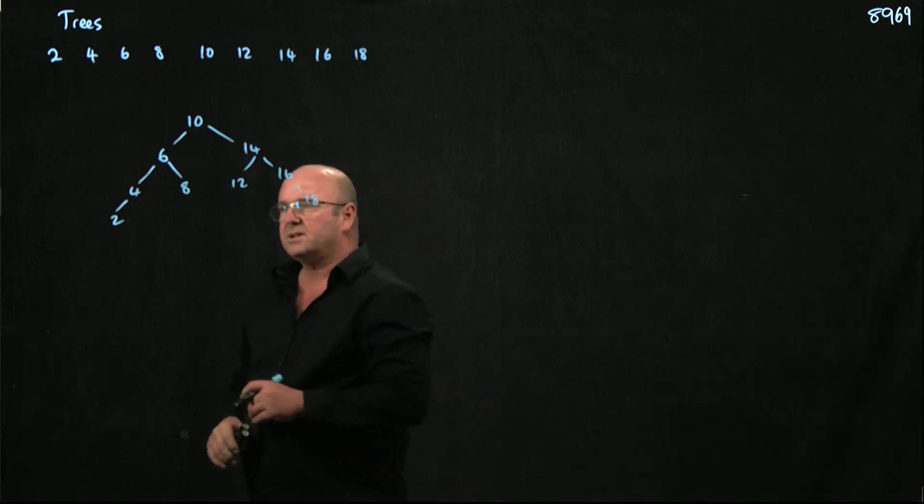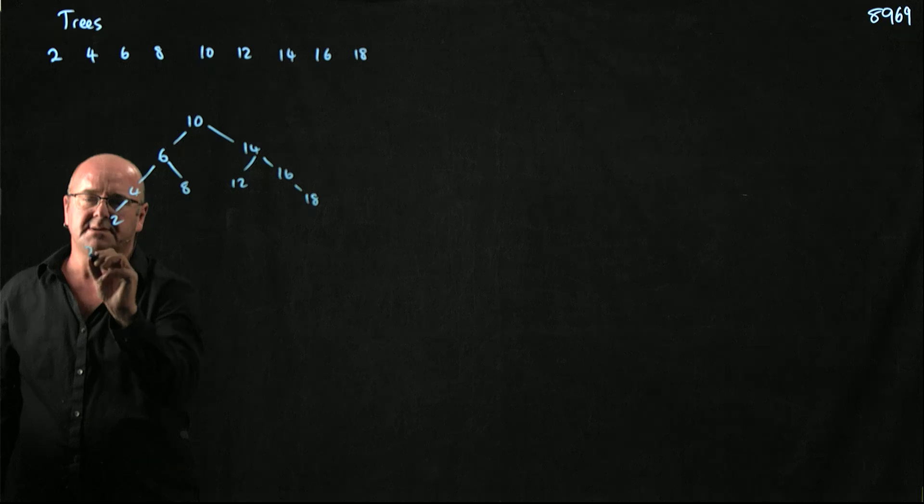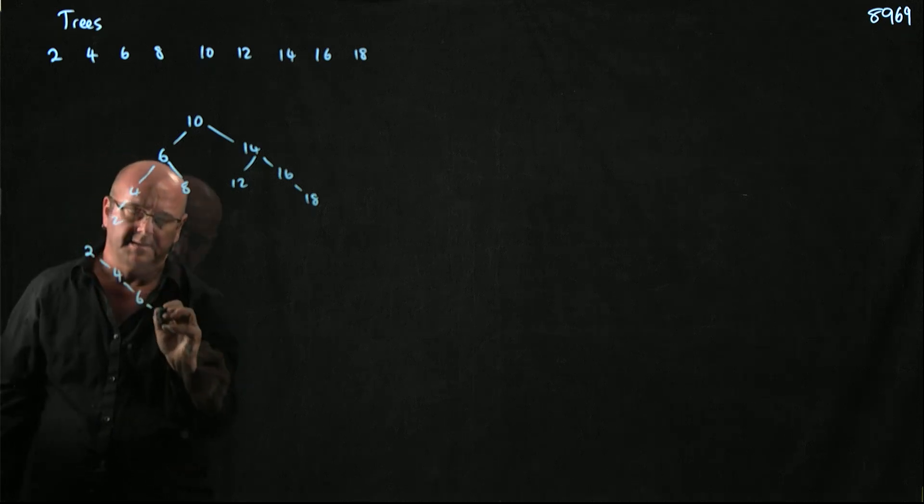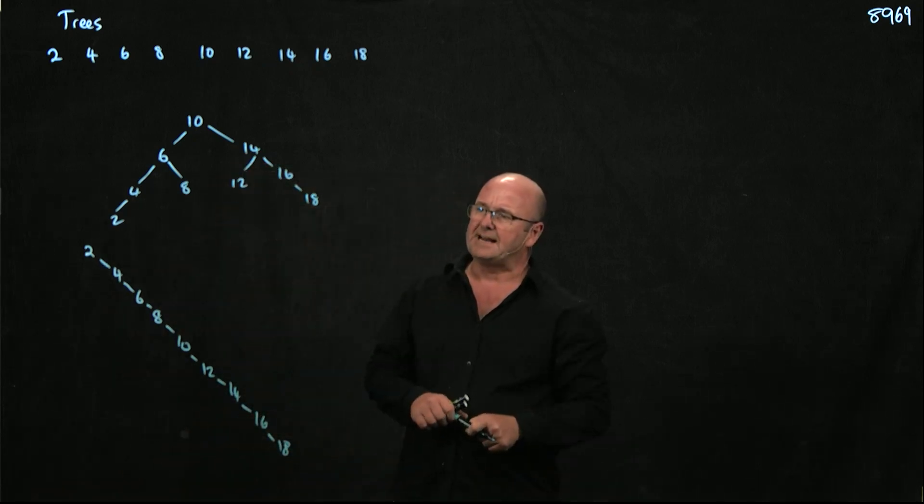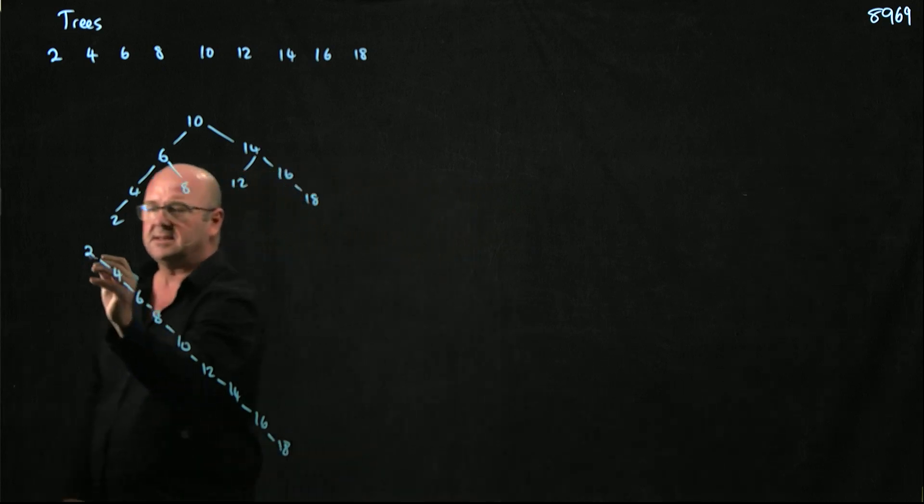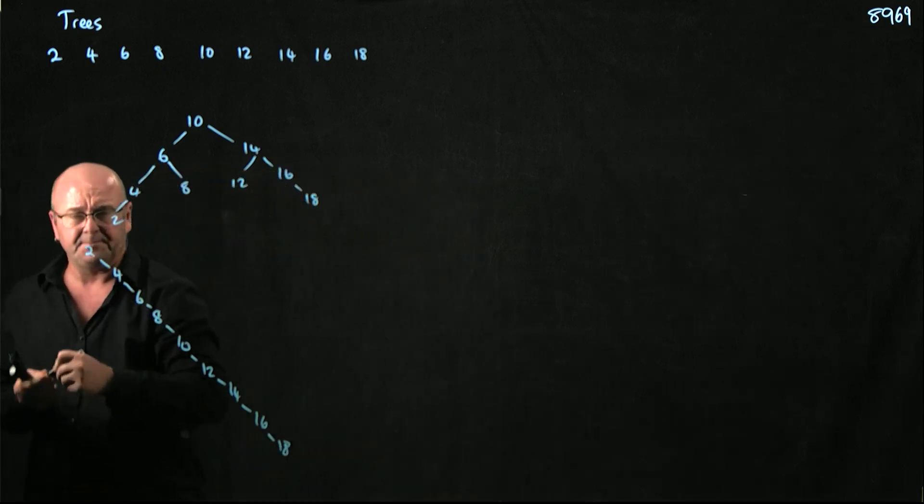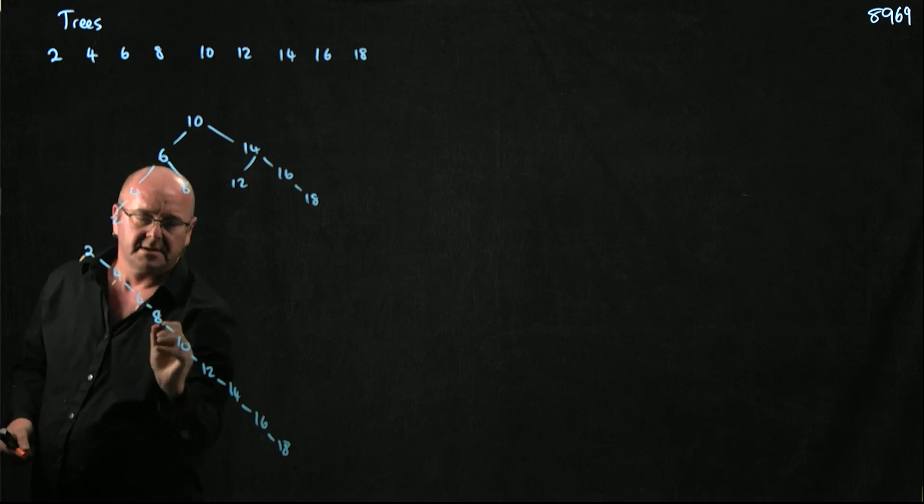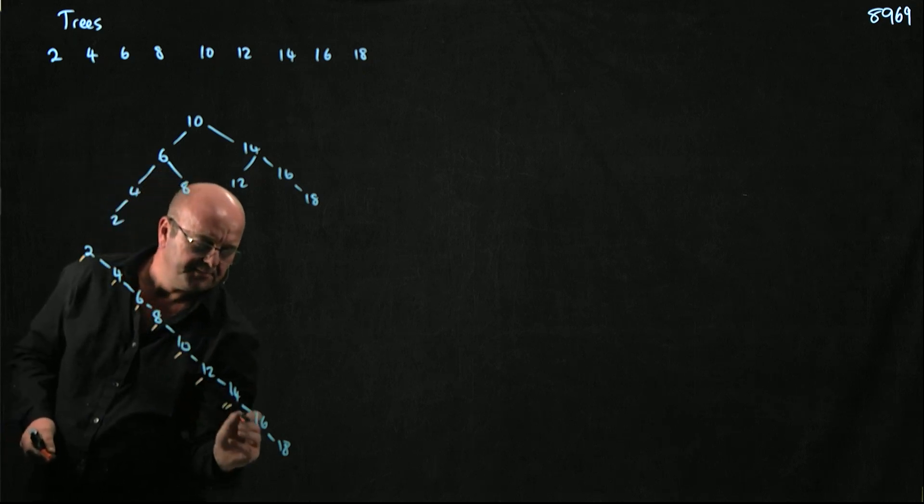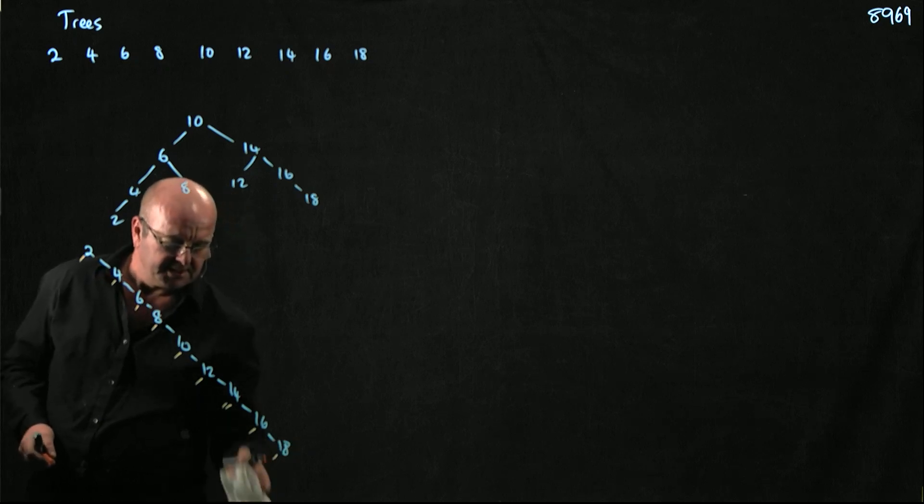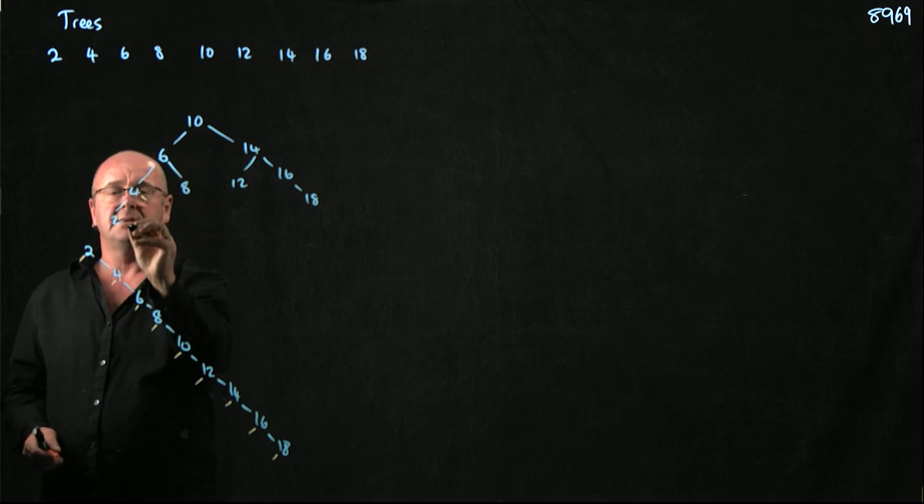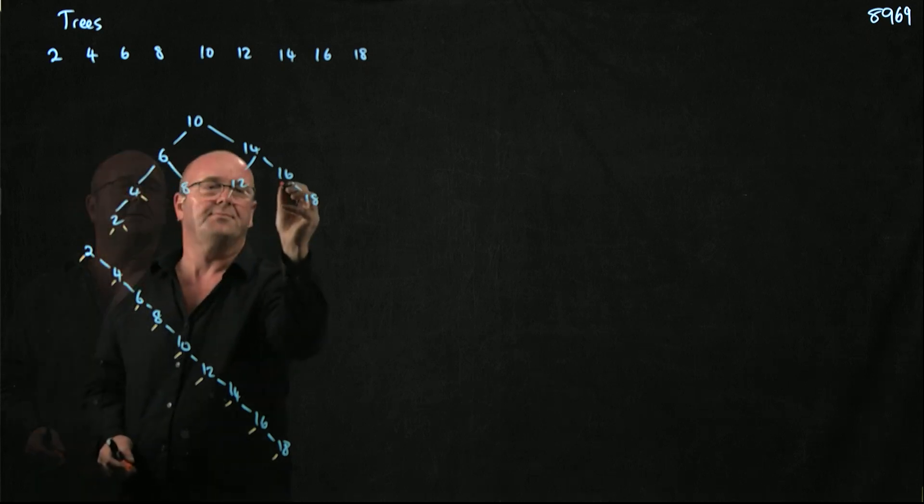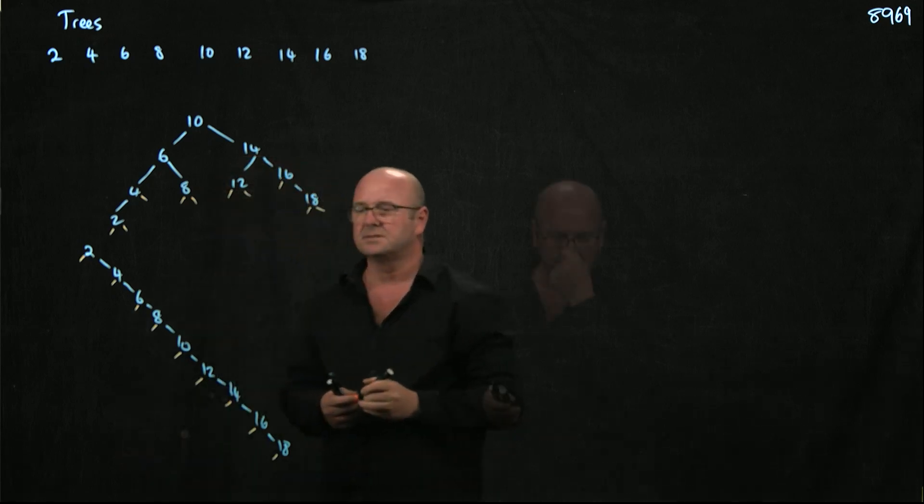But I could also build a tree from these numbers like this. That's also a valid binary search tree. These nodes are null in this tree, just as these nodes are null in this tree. So we've got some nulls too.